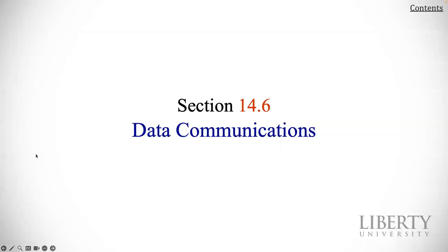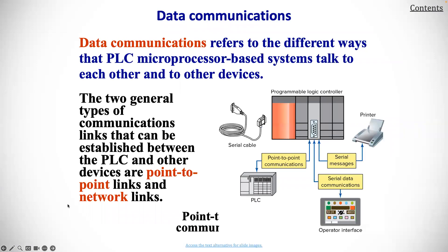Next, let's get into data communications. Data communication refers to different ways that a PLC microprocessor-based system talks to each other and to other devices. The two general types of communication links that can be established between the PLC and other devices are point-to-point and network links.